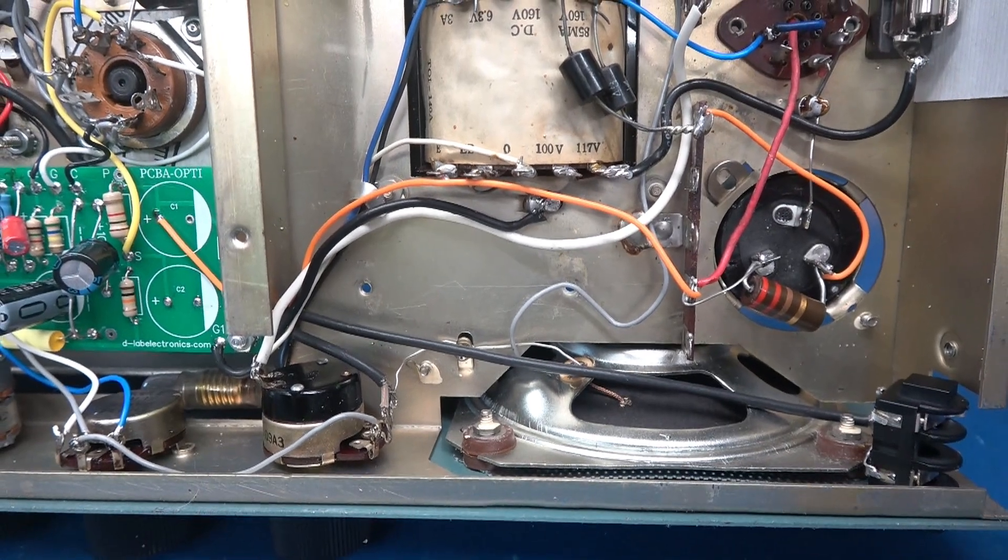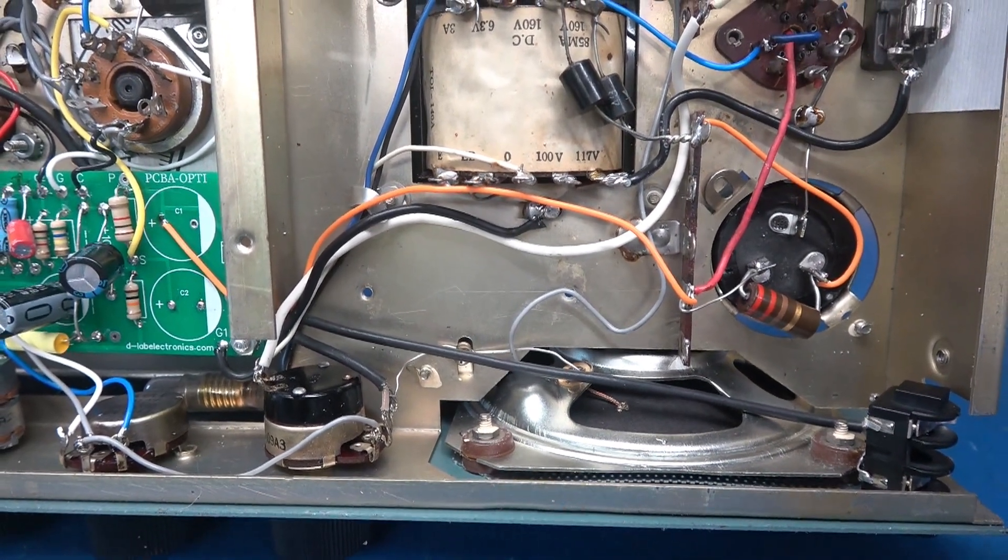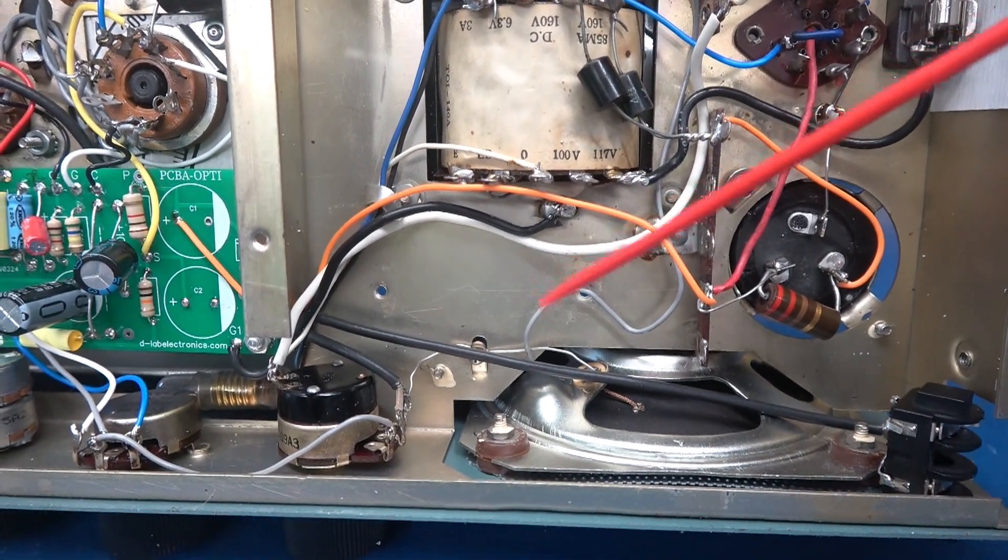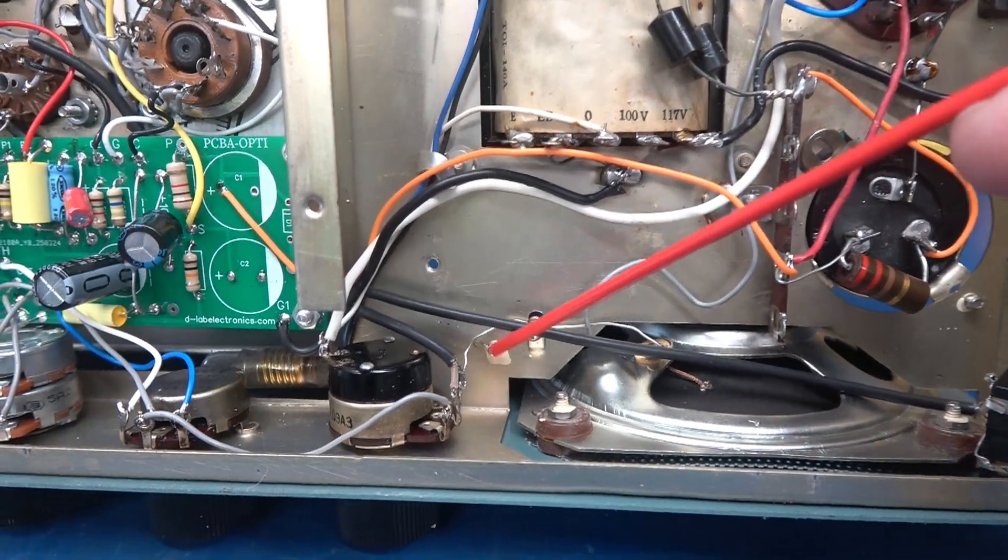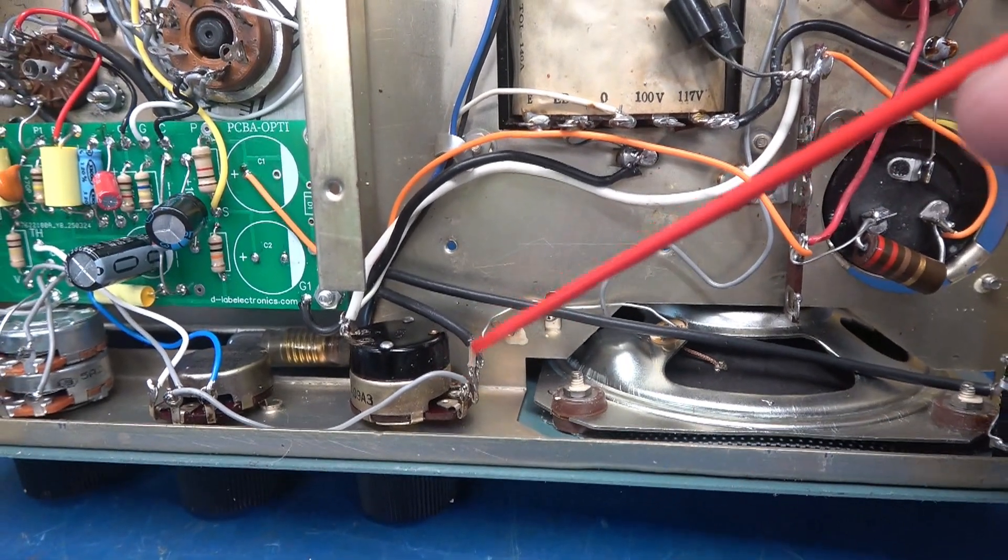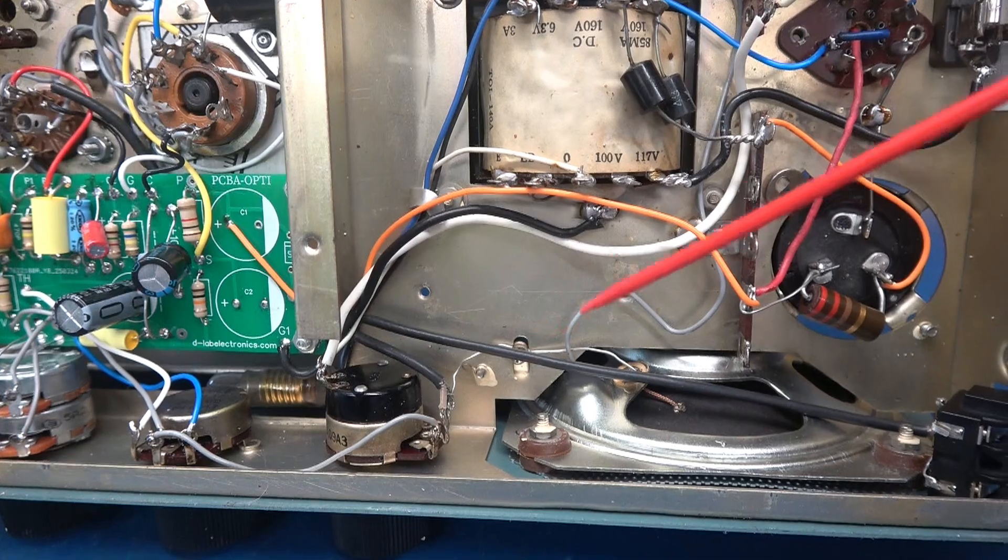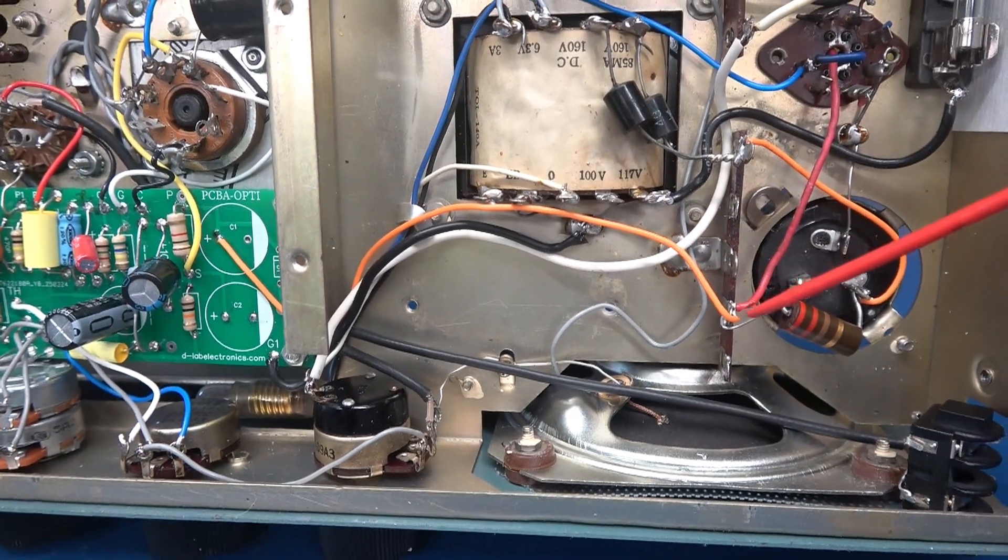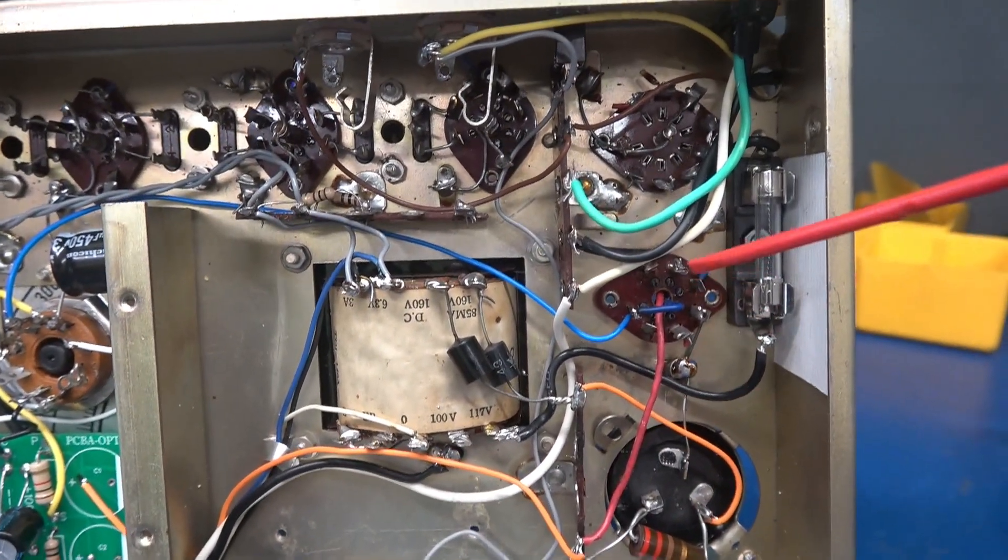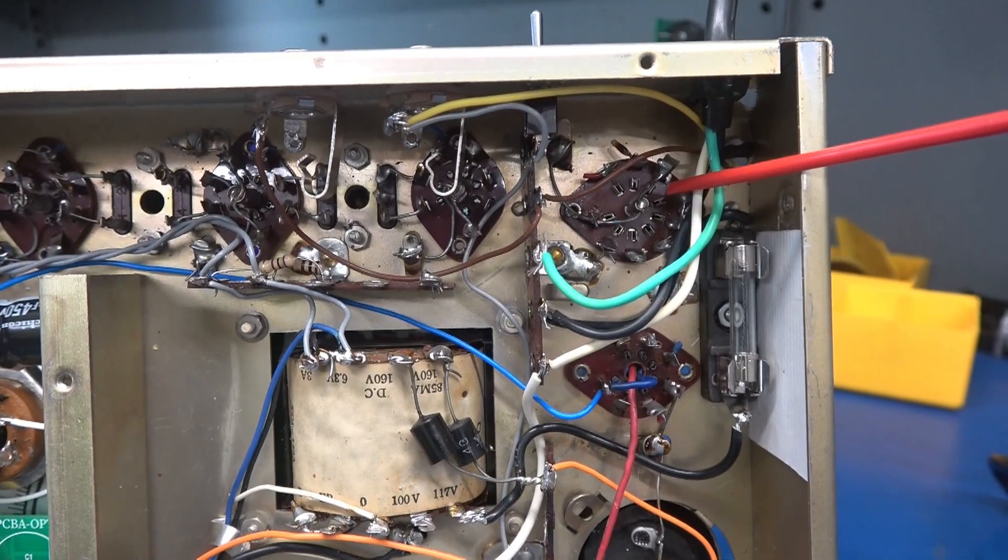Now if you remember, the output transformer used to reside right here. When I initially tested the amp, I heard low level AC hum. So what was happening is that transformer was inducing right into the volume control. There's really no way around it. So I decided okay, we'll relocate it to the top of the chassis. It's actually in a better spot because now it feeds the speaker jacks.